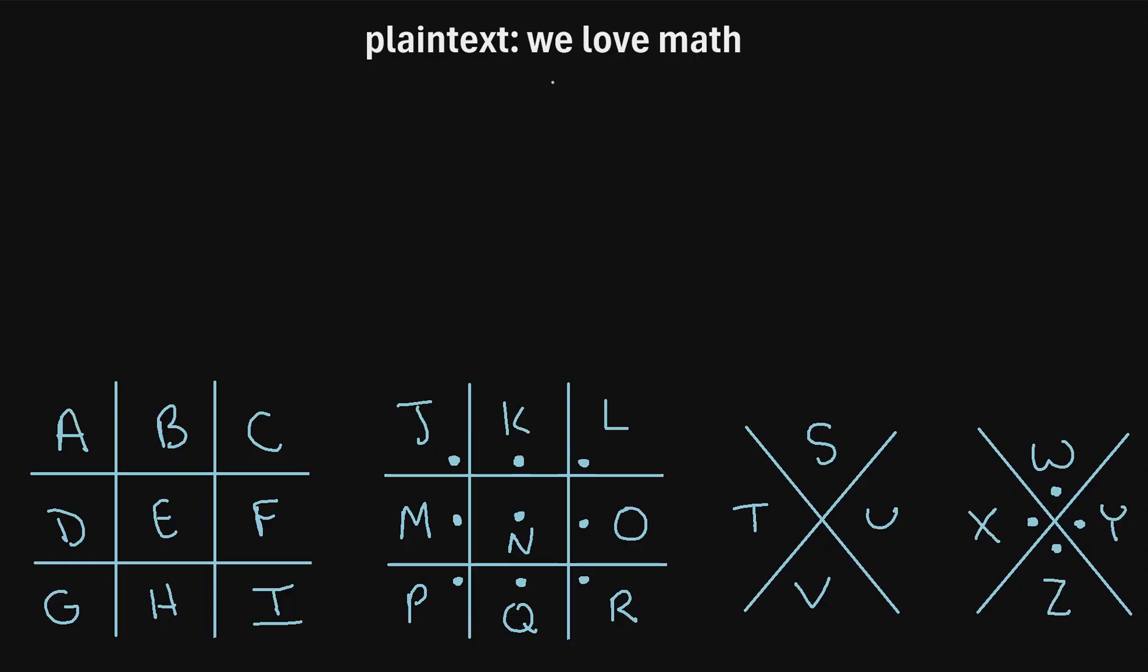Now here's the idea with the pigpen cipher. To encrypt this plain text, we're going to go letter by letter and draw the symbol that it corresponds to. So for example, let's start with W. We can see that W is right here. So what we're going to do is draw the edges of the shape that the W corresponds to. So a W looks like this.